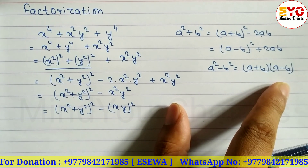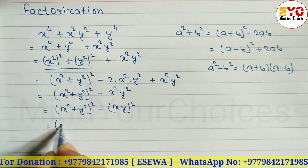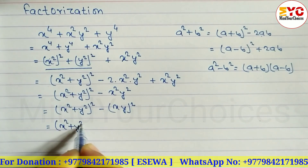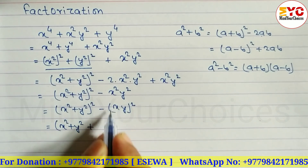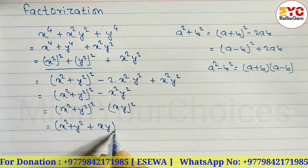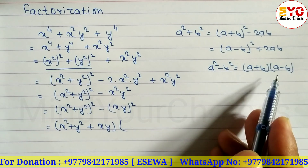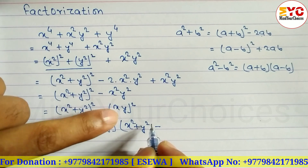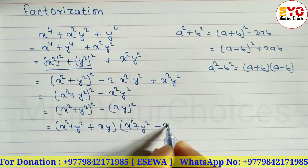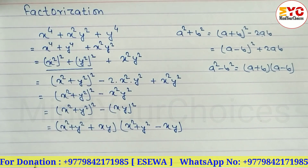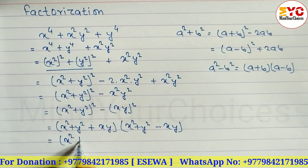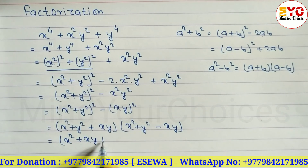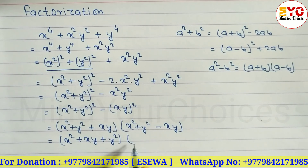Applying the formula: (x² + y² + xy)(x² + y² - xy). Rearranging the terms in standard order, the first factor becomes x² + xy + y² and the second factor becomes x² - xy + y².